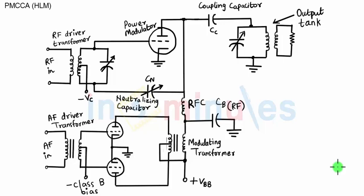We had seen that in a high-level modulation transmitter, we do not require power amplifiers after the modulation stage. That is because the modulation takes place at a high power level, for which the modulating signal must be power amplified and then given to the modulator.